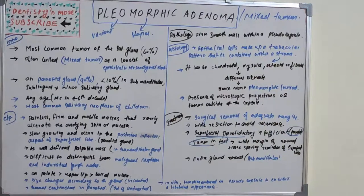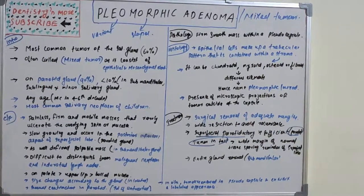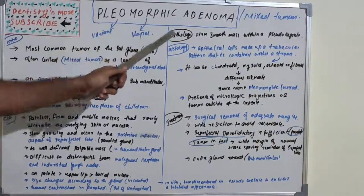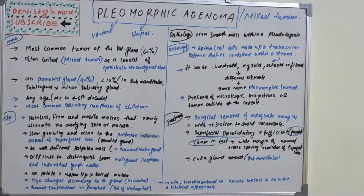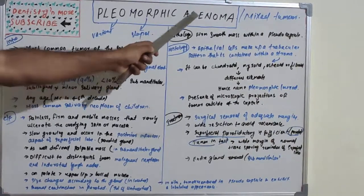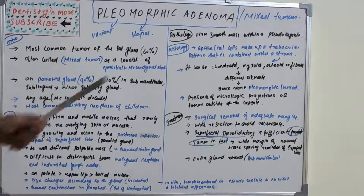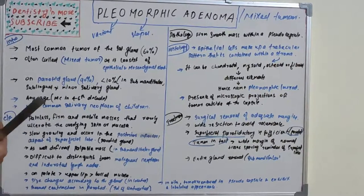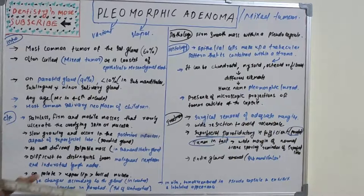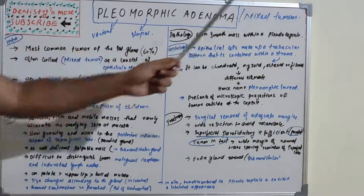Hello everyone, welcome back to a new session on Dentistry and More. Today's topic is pleomorphic adenoma. From the name itself we'll get an idea about this tumor. 'Pleo' means various, 'morphic' means shapes, and 'adenoma' relates to a gland tumor — so it is a gland tumor which has various shapes and elements.